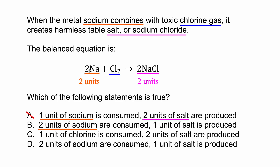Two units of sodium are consumed — let's check. That's two units of sodium, which matches. But then they say only one unit of salt is produced, so that's no good. Looking at C: one unit of chlorine is consumed. Chlorine is Cl2 here. If there's no number in front, it's always a one. So there is one unit of chlorine, and two units of salt are produced — we know that is true. So C is the correct option.